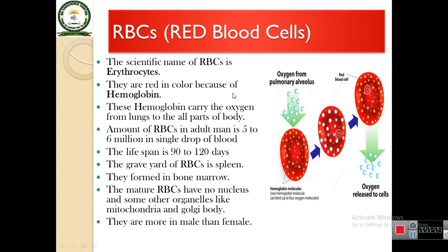RBCs are more in males than females due to the difference in metabolism. As shown in the diagram, the RBCs take oxygen from the pulmonary alveoli — that means from the lungs — and supply it to all parts of our body. These RBCs are capable of carrying oxygen due to hemoglobin, which contains iron and has the property to bind with oxygen.